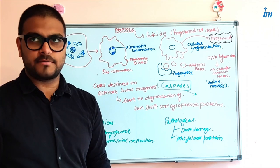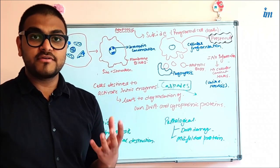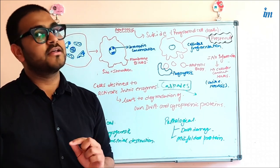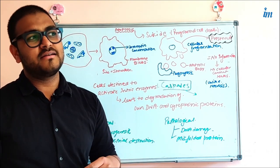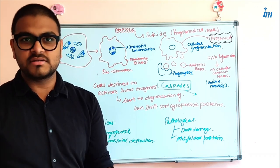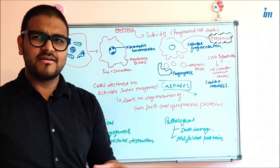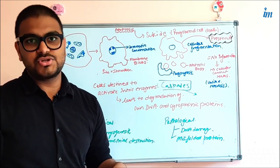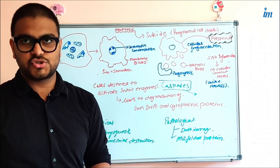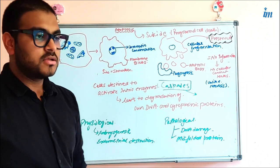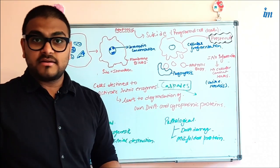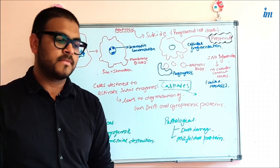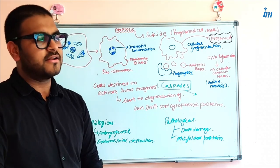Why should apoptosis occur? As already noted, it is a normal phenomenon. The significance of this phenomenon is to eliminate cells that are not needed or cells that are aged. For example, RBCs have a lifespan of 120 days and should die after that because they can no longer function well. Cells that may be potentially harmful should also commit apoptosis. So it is a physiological phenomenon — it occurs every day with no big pathology associated.